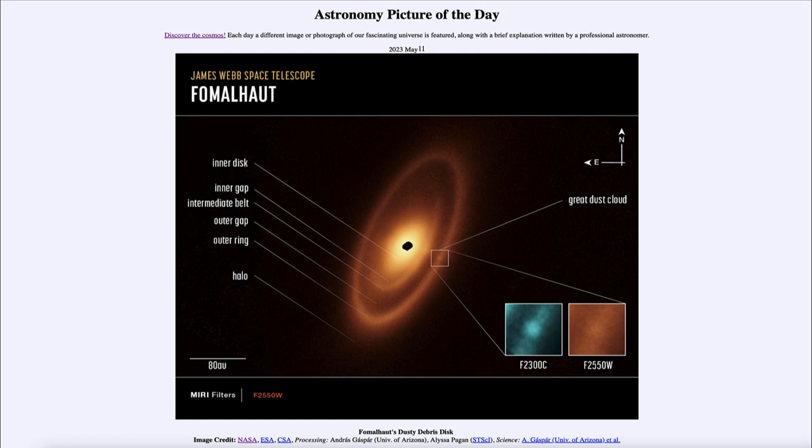Here we can actually see several rings of material around this. We see the scale down toward the bottom left. That bar is 80 astronomical units, which would be larger than the diameter of the planetary orbits within our solar system. Neptune is the furthest planet away at about 30 astronomical units.